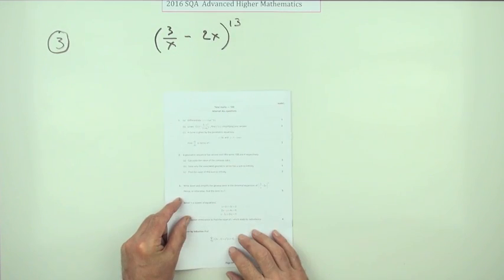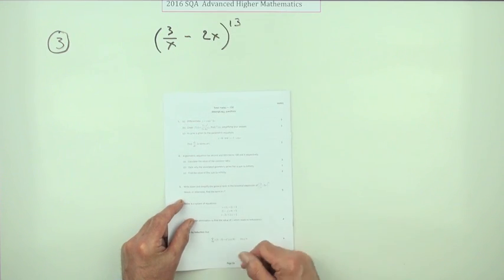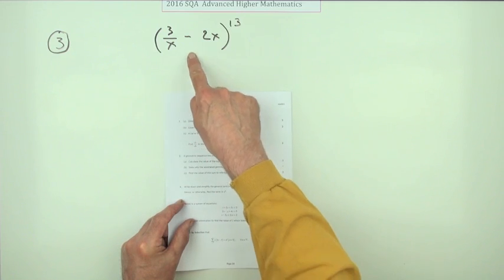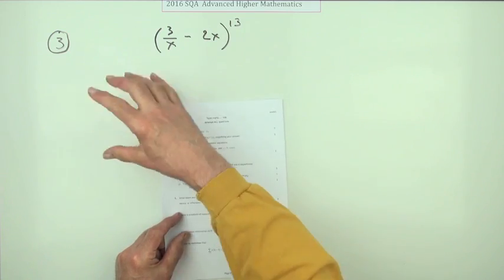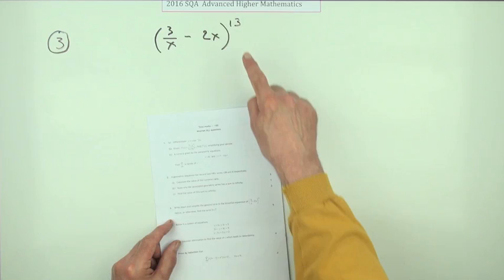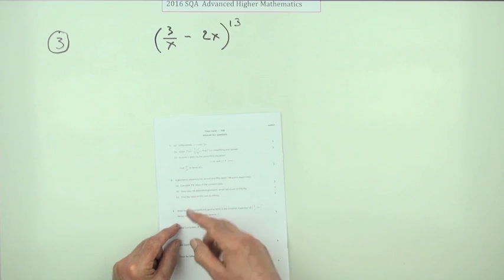Question 3 from the 2016 Advanced Higher Maths, the binomial expansion question worth five marks. At least it's find the general term and then a specific one, not that big plod through writing them all out. You can see it wouldn't be with a power 13 anyway, although it does say hence or otherwise.